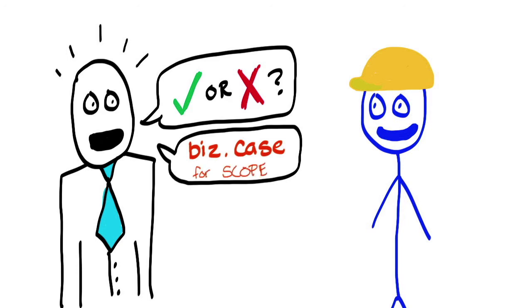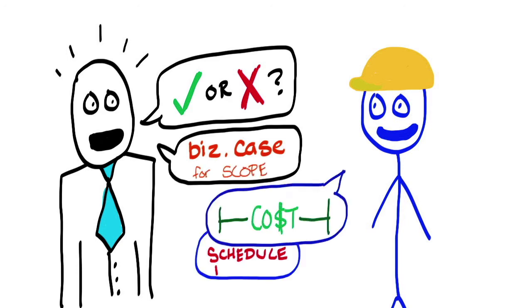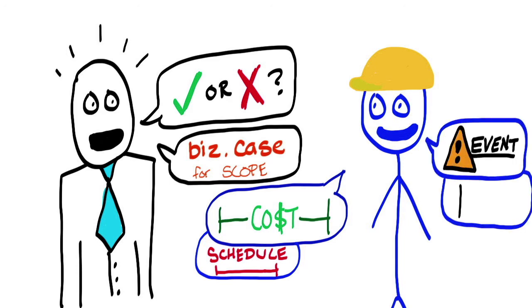To make this decision, we need to ensure you are clear on the business case for the scope you intend to deliver, and can provide a realistic range of cost and schedule outcomes along with the important risk events, variability, and issues that are driving these ranges.